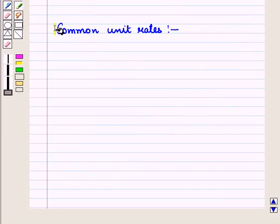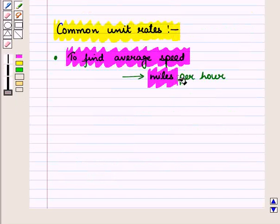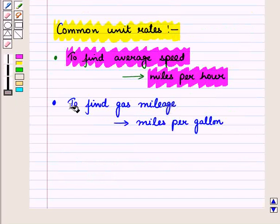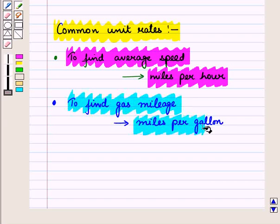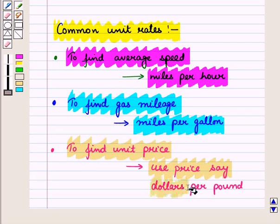Now, let us see some of the common unit rates. To find average speed, we use miles per hour. To find gas mileage, we use miles per gallon and to find unit price, we use price, say, dollars per pound.